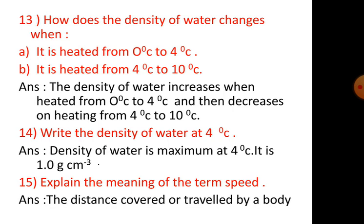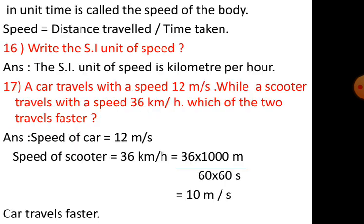Number 15. Explain the meaning of the term speed. The distance covered or travelled by a body in unit time is called the speed of the body. Speed is equal to distance travelled by time taken.